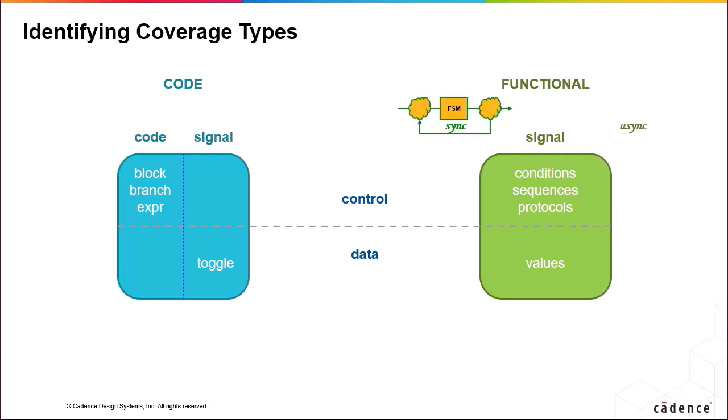State machine coverage is a proxy for synchronously collected signal coverage in the control domain, where conditions are states, sequences are transitions between states, and protocols are the interactions between state machines.